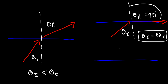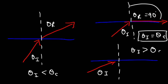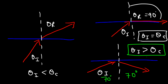Once the incident angle exceeds the critical angle — so this time it's very wide — there's not going to be any angle of refraction. Only reflection will occur. For example, if the incident angle is 70 degrees, the reflected angle will also be 70 degrees. Remember, for reflection, the angle of incidence equals the angle of reflection.